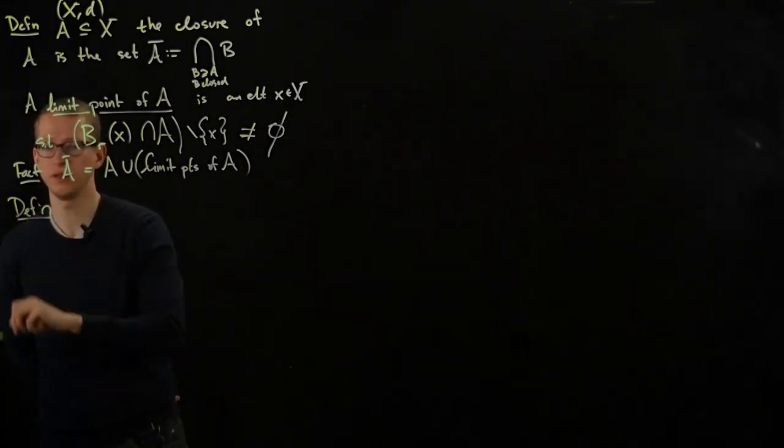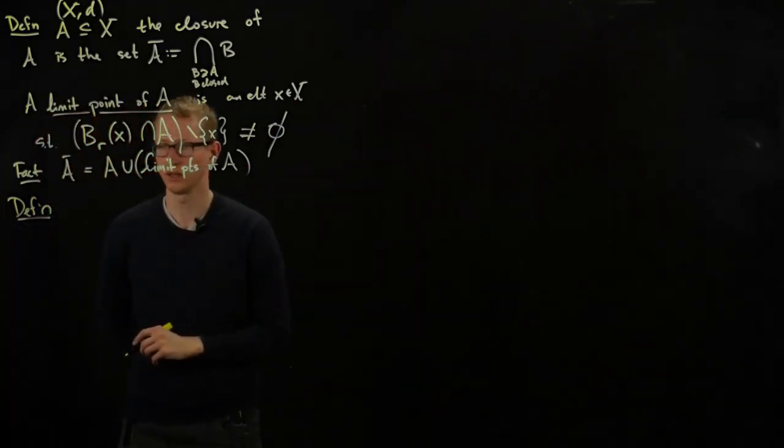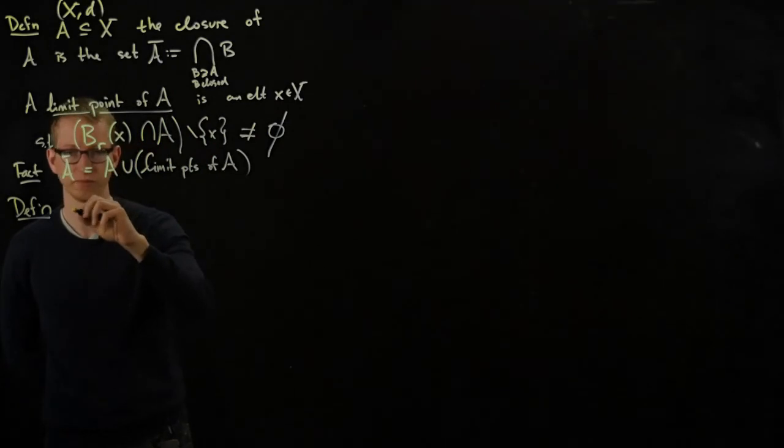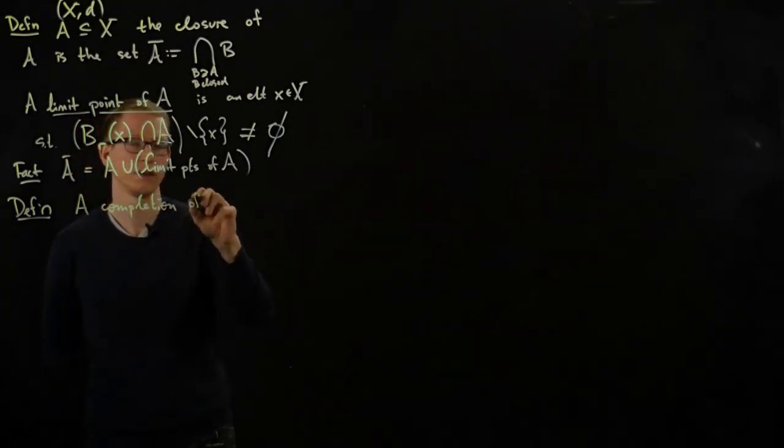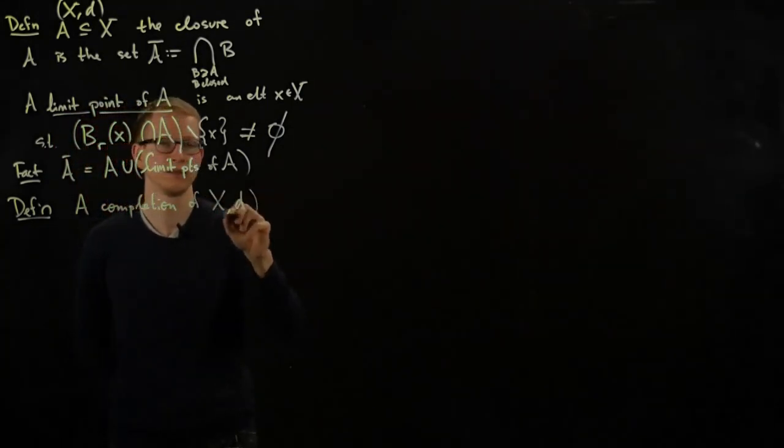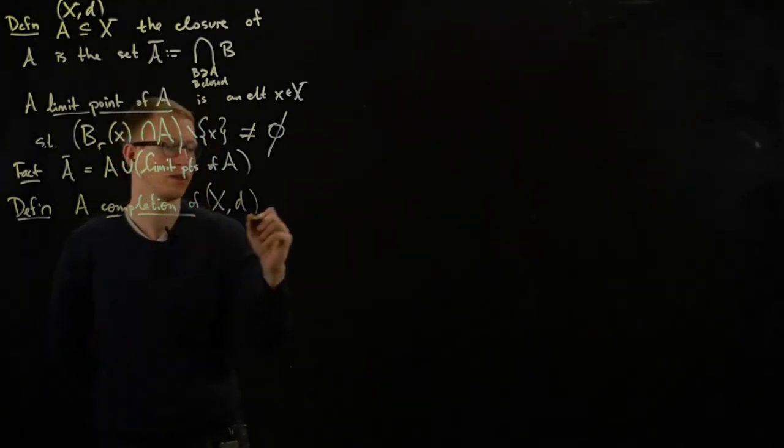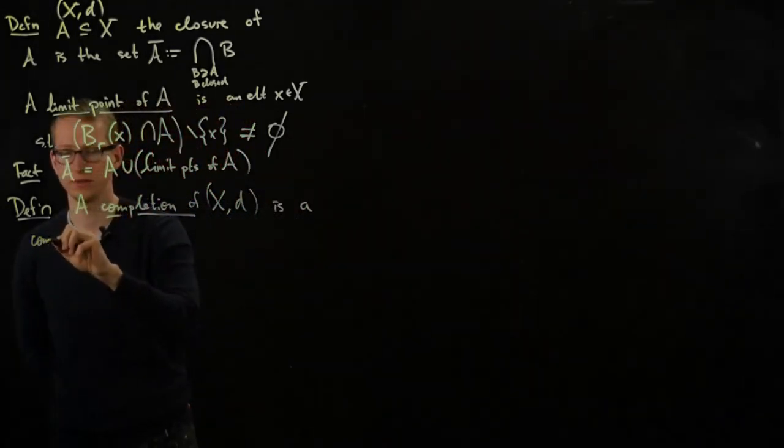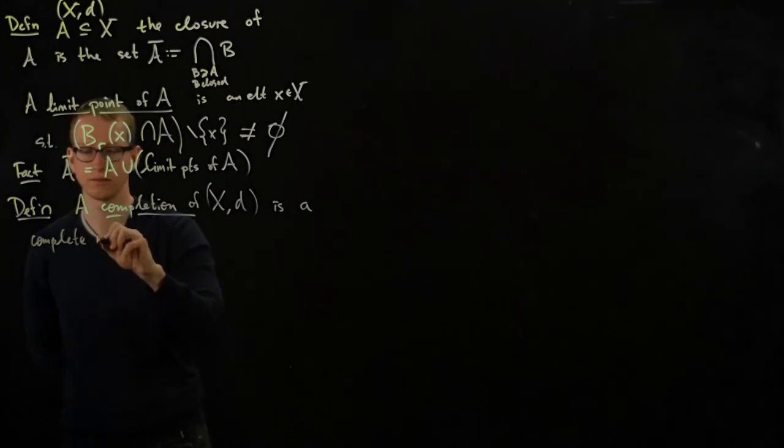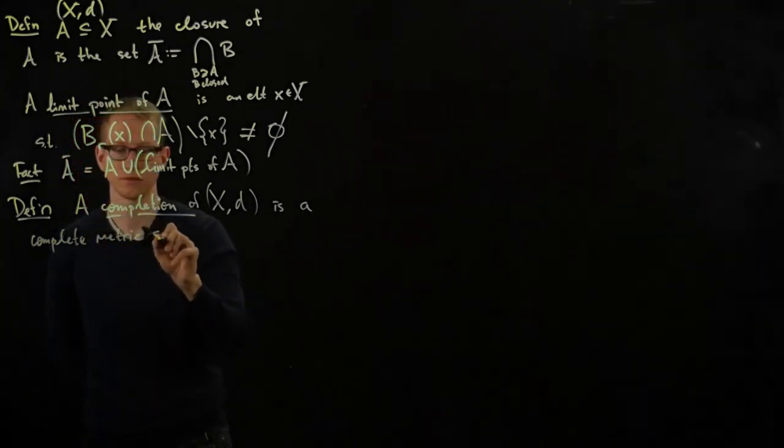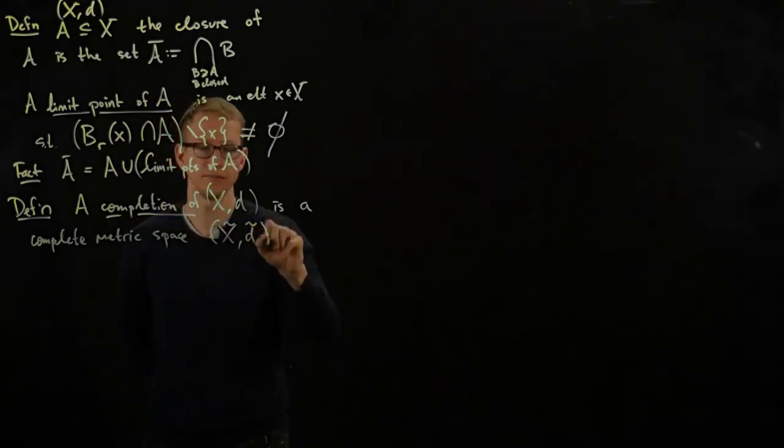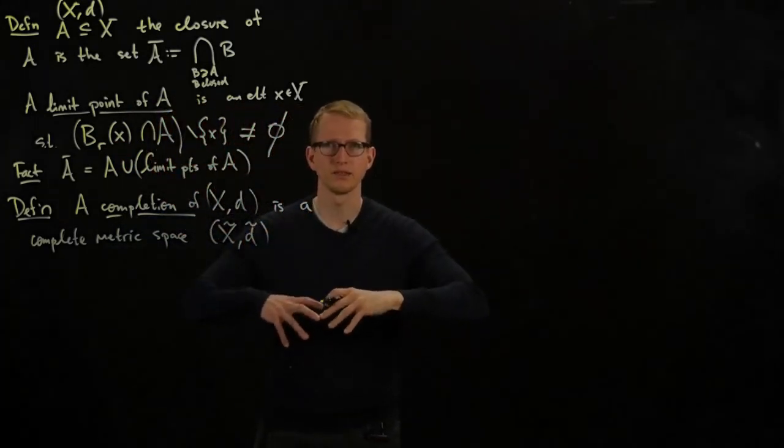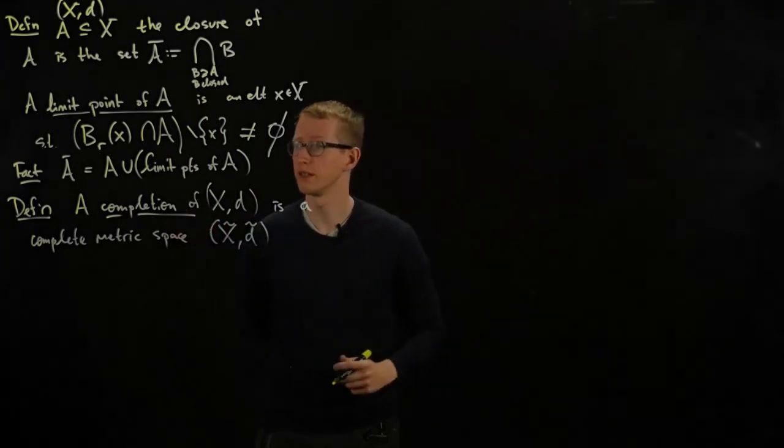And this definition is slightly different than what's in your book. So again, if x,d is a metric space, a completion of x,d is a complete metric space, which we'll denote by x tilde, d tilde. And the reason is because we're going to think of x tilde and d tilde as something bigger than x.